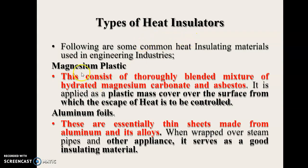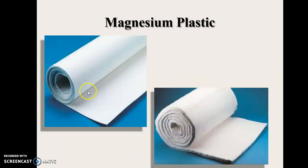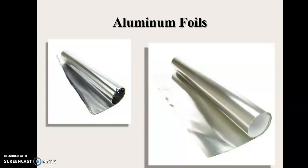Types of heat insulators: we have magnesium plastic and aluminum foils. Magnesium plastic consists of a thoroughly blended mixture of hydrated magnesium carbonate and asbestos, and it is applied as a plastic mass cover over the surface from which the escape of heat is to be controlled. Aluminum foils are essentially thin sheets of aluminum and its alloys; when wrapped over steam pipes and other appliances, they serve as good insulating material.